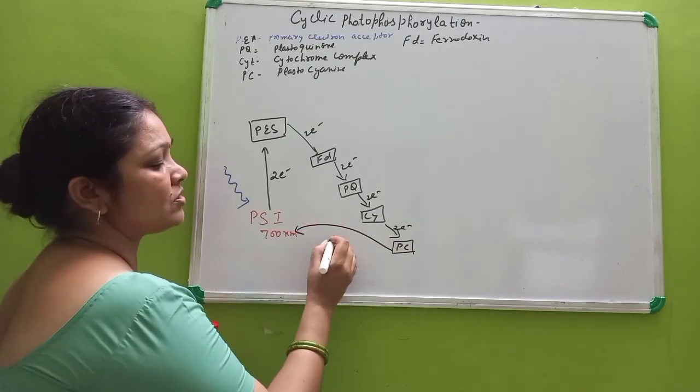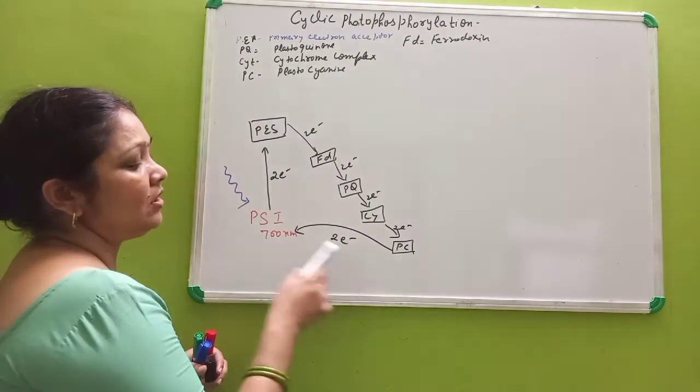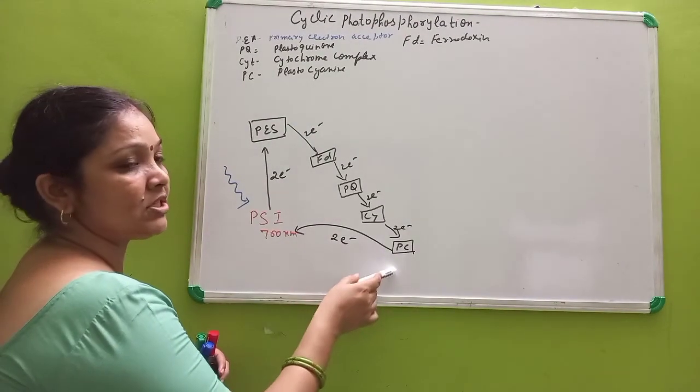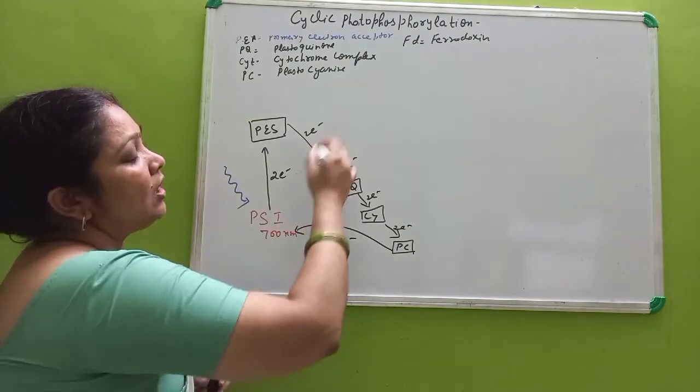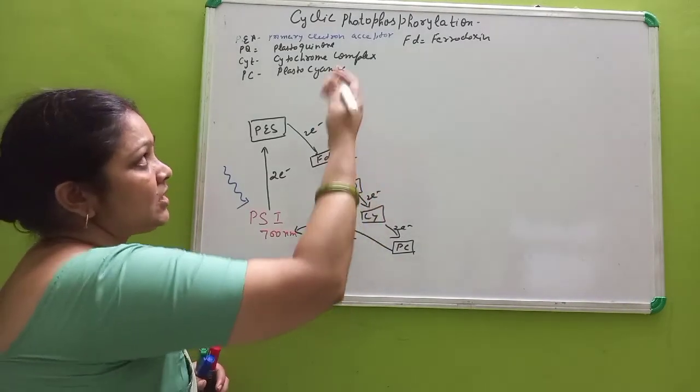And the electron which passes to PC, when it is released from here, it comes back to photosystem 1 again. Means the electron which is lost from here is replaced by the electron which is released from PC. So that's why it is called cyclic process.